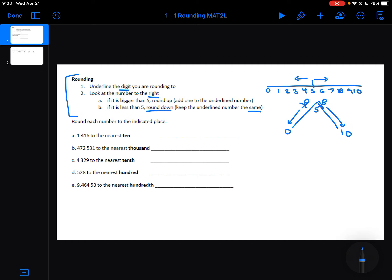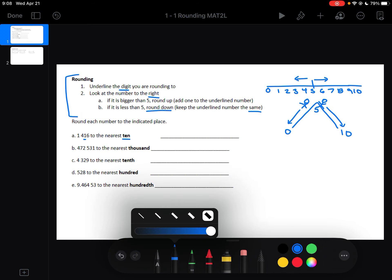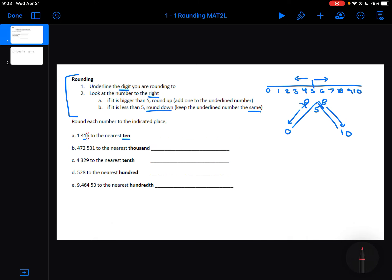So first thing we're going to do is round each number to the indicated place. So 1,416 to the nearest 10. So that's the place, the digit that I'm going to underline, the one in the 10 spot. Then I'm going to look at the number to the right. Let's circle that in red. So that's a 6. 6 is bigger than 5.